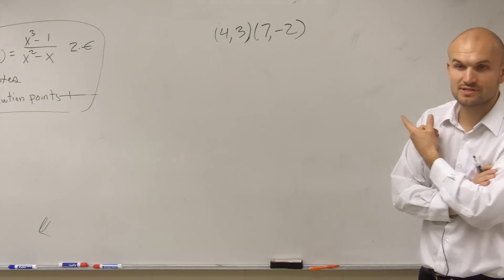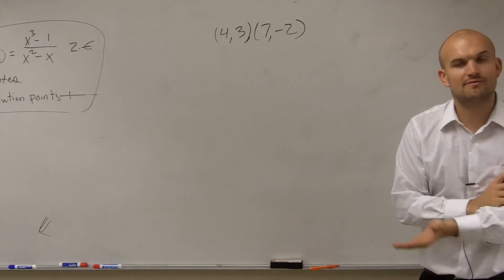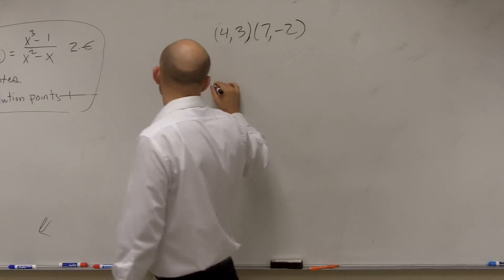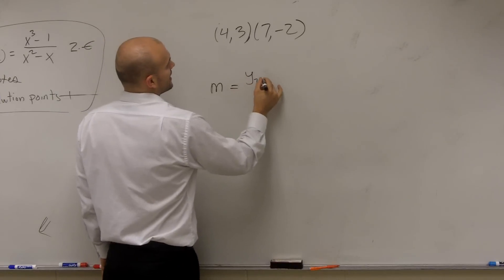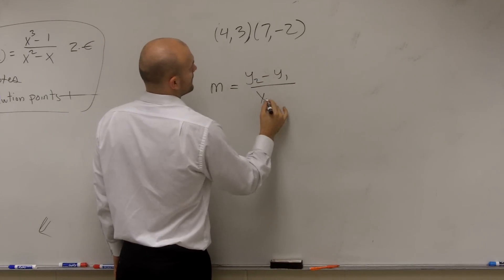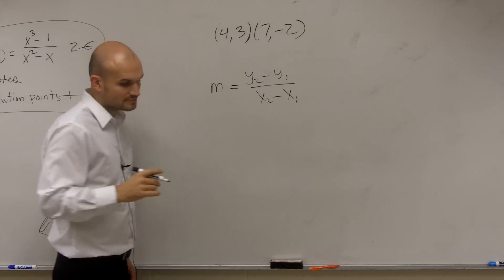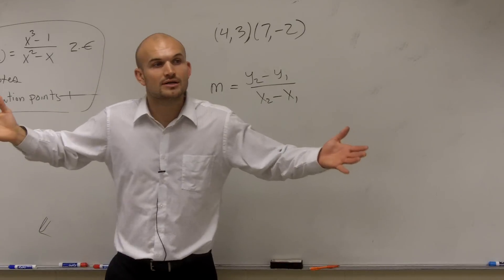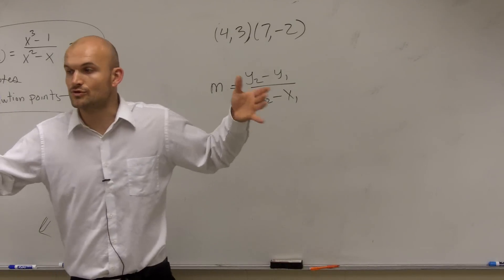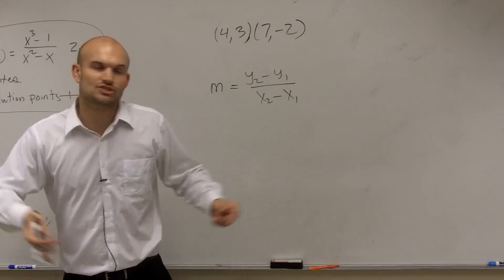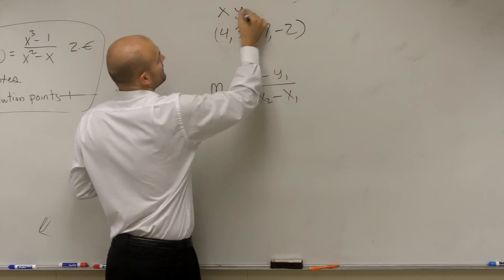You can go ahead and graph those if you want to and define the slope. However, there's also a formula that we use, which we call the slope formula. And the slope formula distinguishes our two points. Remember, slope tells us the change in the y's over the change in the x's. How are our x and y coordinates changing?